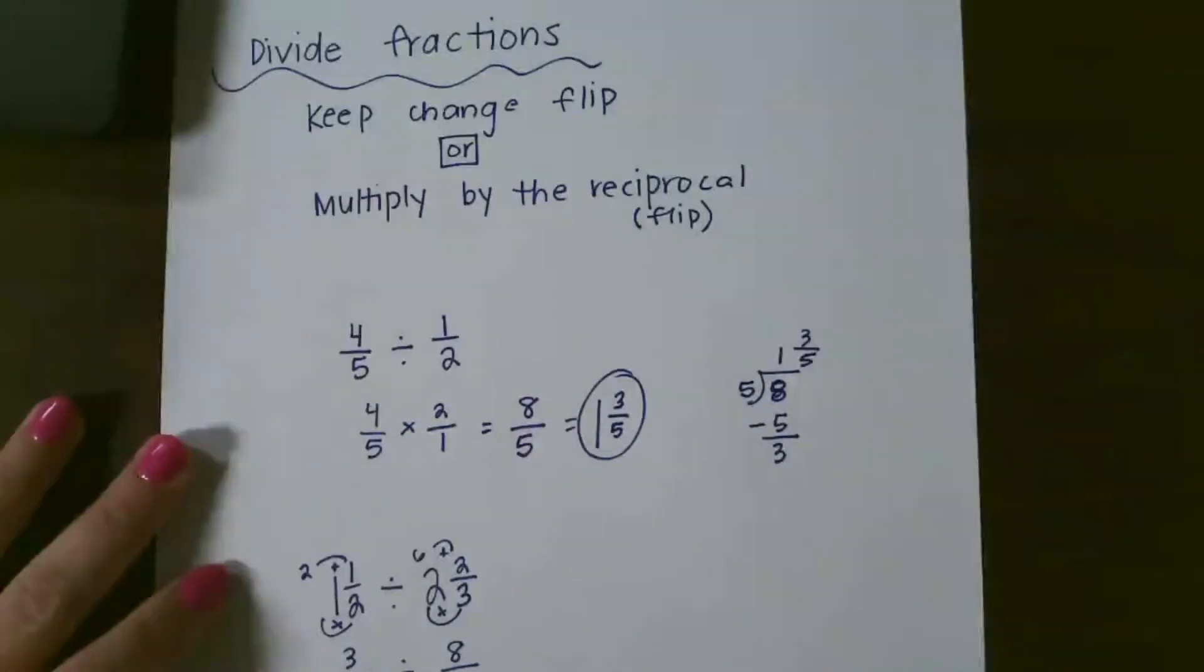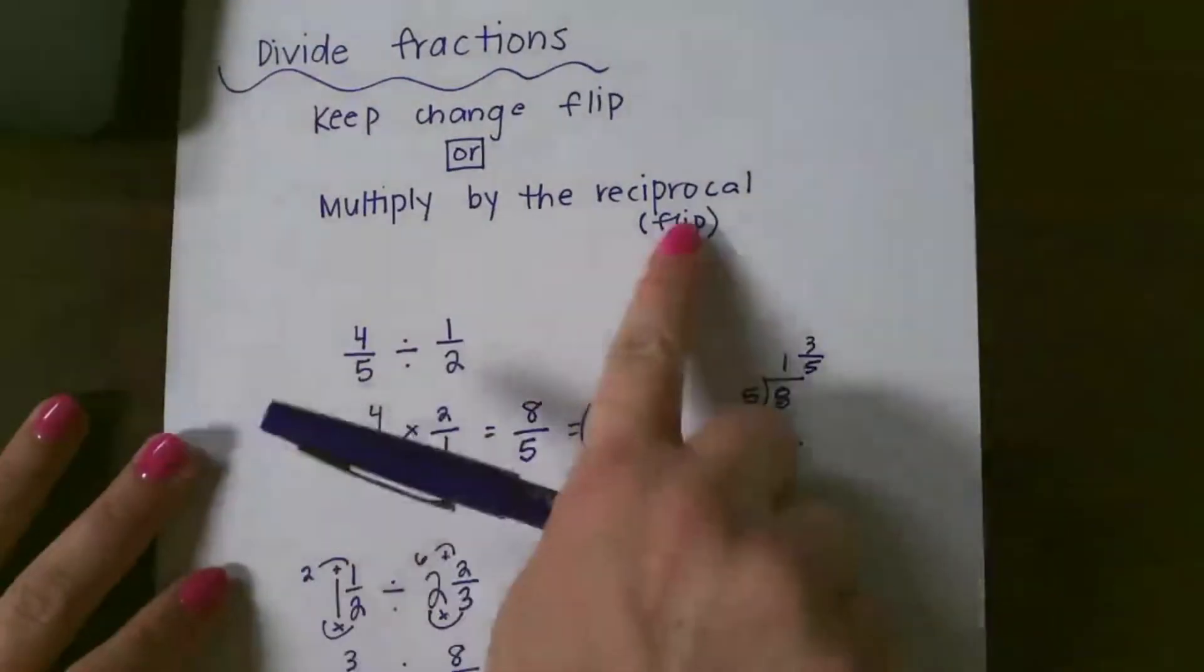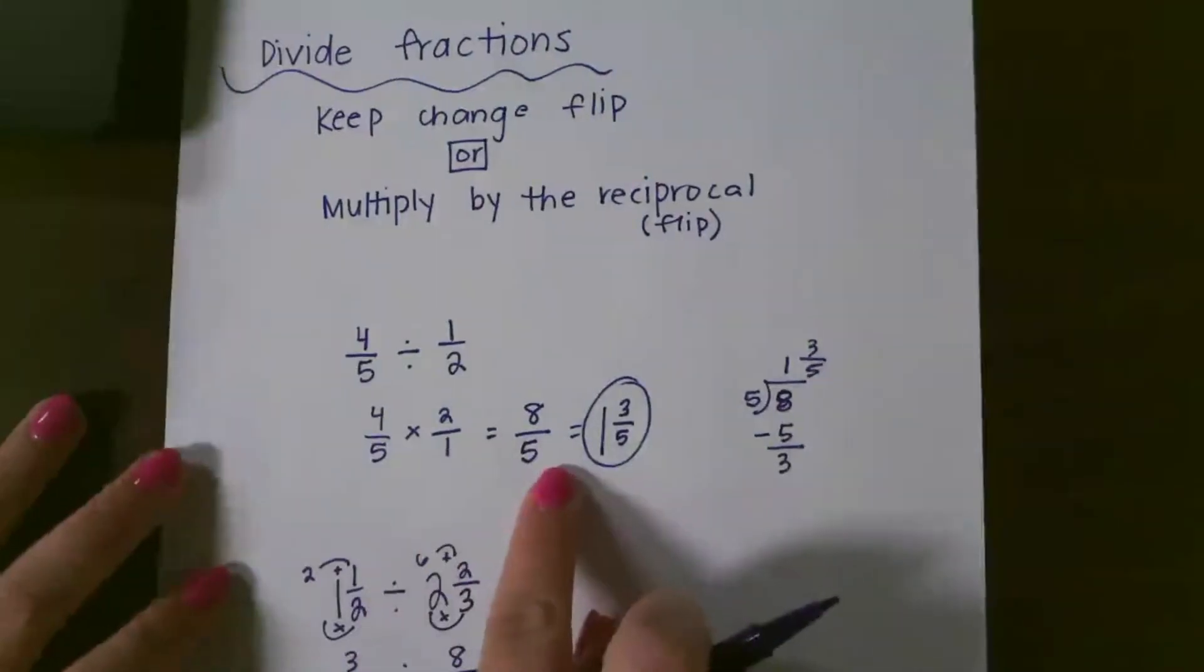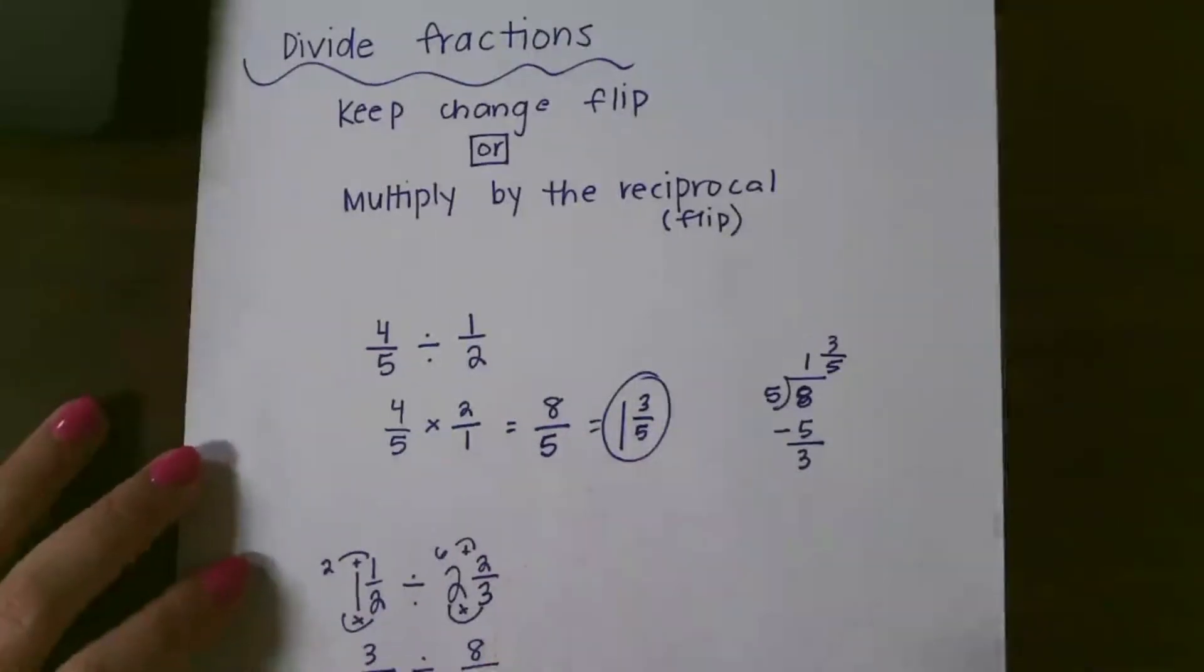So just remember, multiply by the reciprocal and follow the multiplication rules of going straight across, and just remember to simplify at the end if you can.